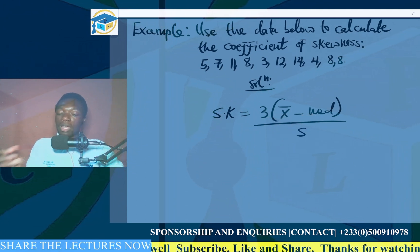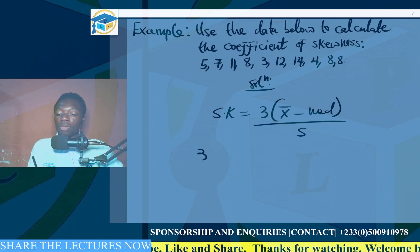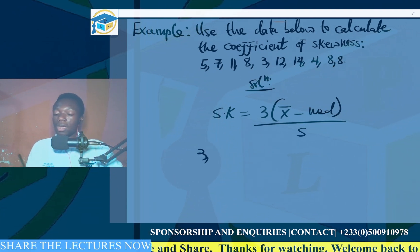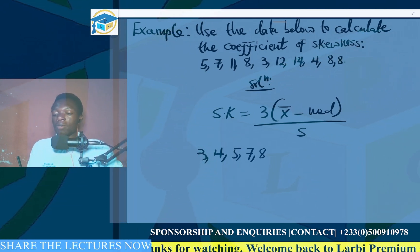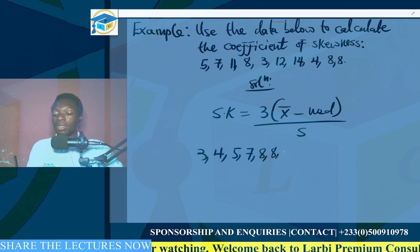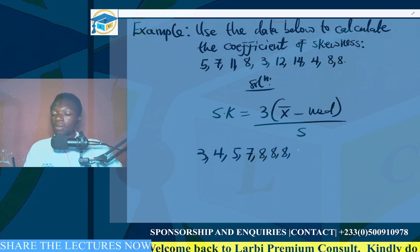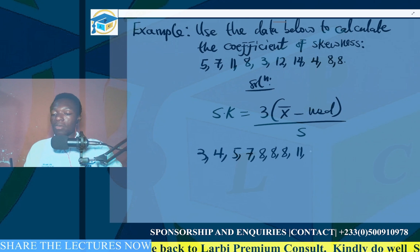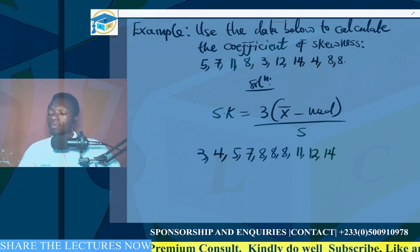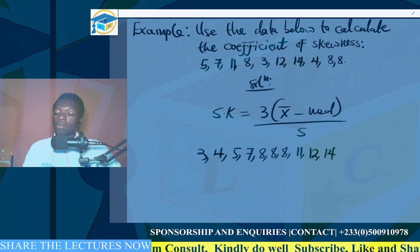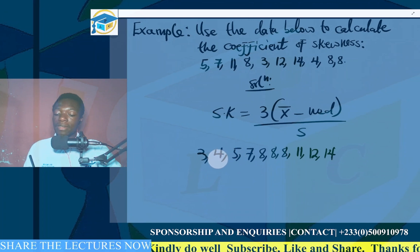Arranging in ascending order, we have: 3, 4, 5, 7, 8, 8, 8, 11, 12, 14. That's supposed to be 10 values total. Counting: 1, 2, 3, 4, 5, 6, 7, 8, 9, 10. Good.